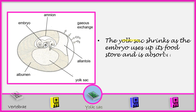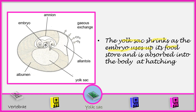The yolk sac shrinks as the embryo uses up its food and is absorbed into the body at hatching. We have the yolk sac here — it is the one that has got the food nutrients, and it goes on shrinking as the chick is using up the food store. On hatching, the sac will enter into the body of the chick.